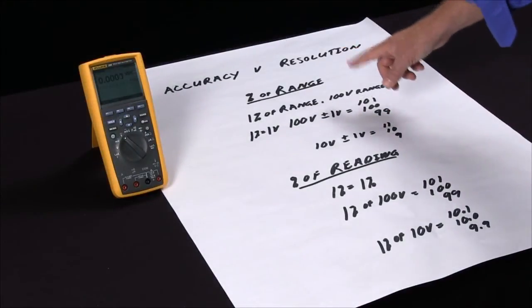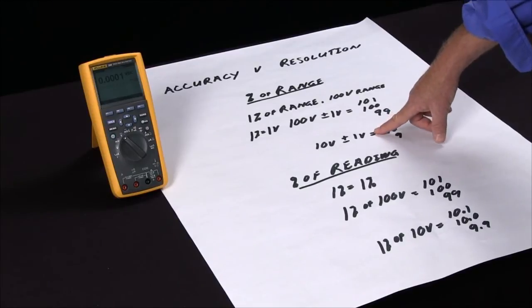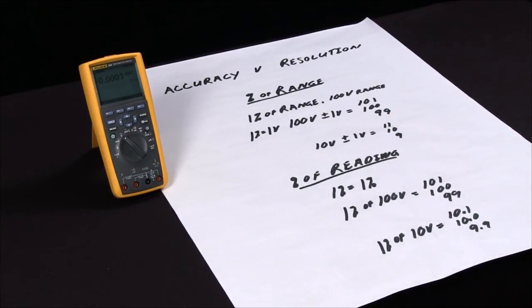So here with percent of reading, the accuracy is a tenth of a volt. The same thing specified with percent of range at one percent is now plus or minus one volt. So it's very important if you're looking for accurate readings to make sure you select the device with percent of reading versus percent of range.